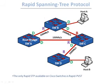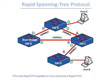Rapid spanning tree protocol does not have a blocking port like regular spanning tree. Instead, it has an alternate port. Under normal conditions, the alternate port acts like a blocking port, blocking all traffic. However, the alternate port is essentially an alternate path to the root bridge — meaning it is an alternate way to reach the root bridge should the root port fail.